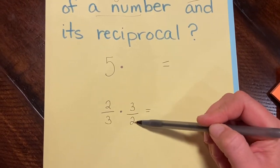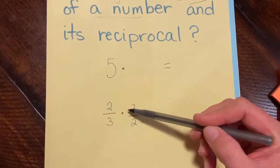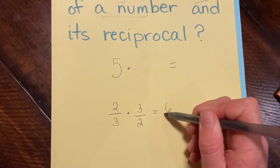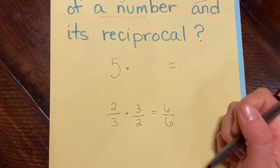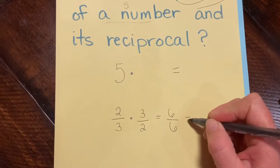Two times three is six. Three times two is six. Six divided by six equals one.